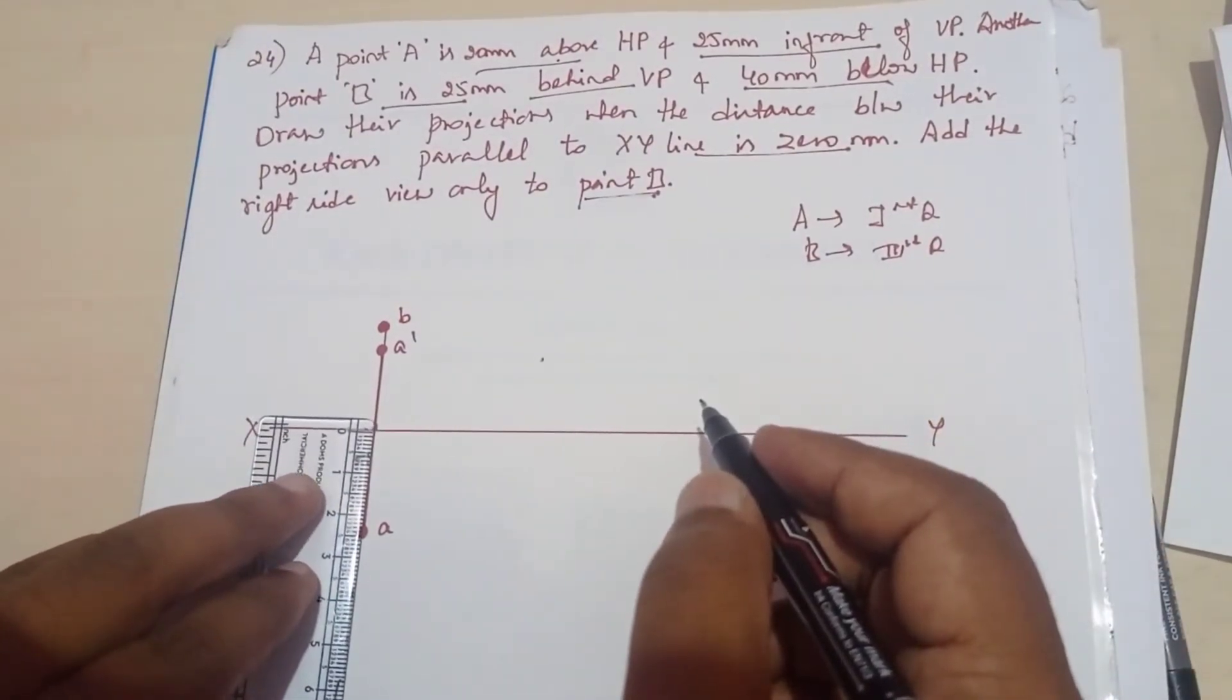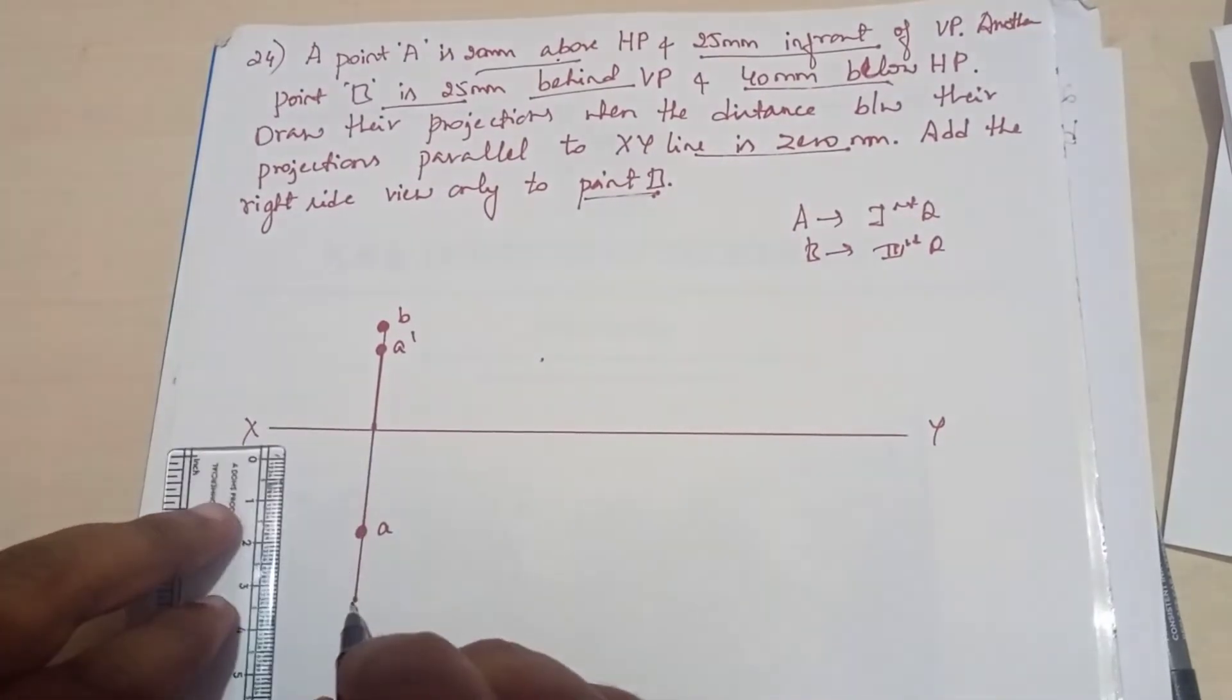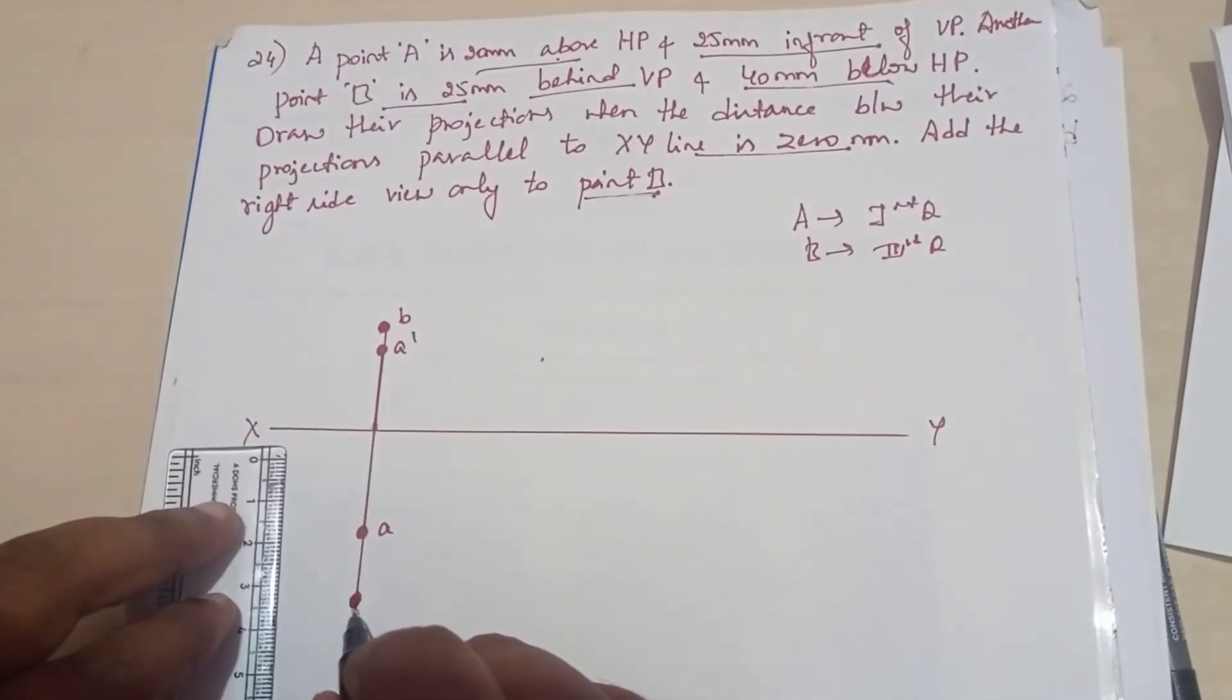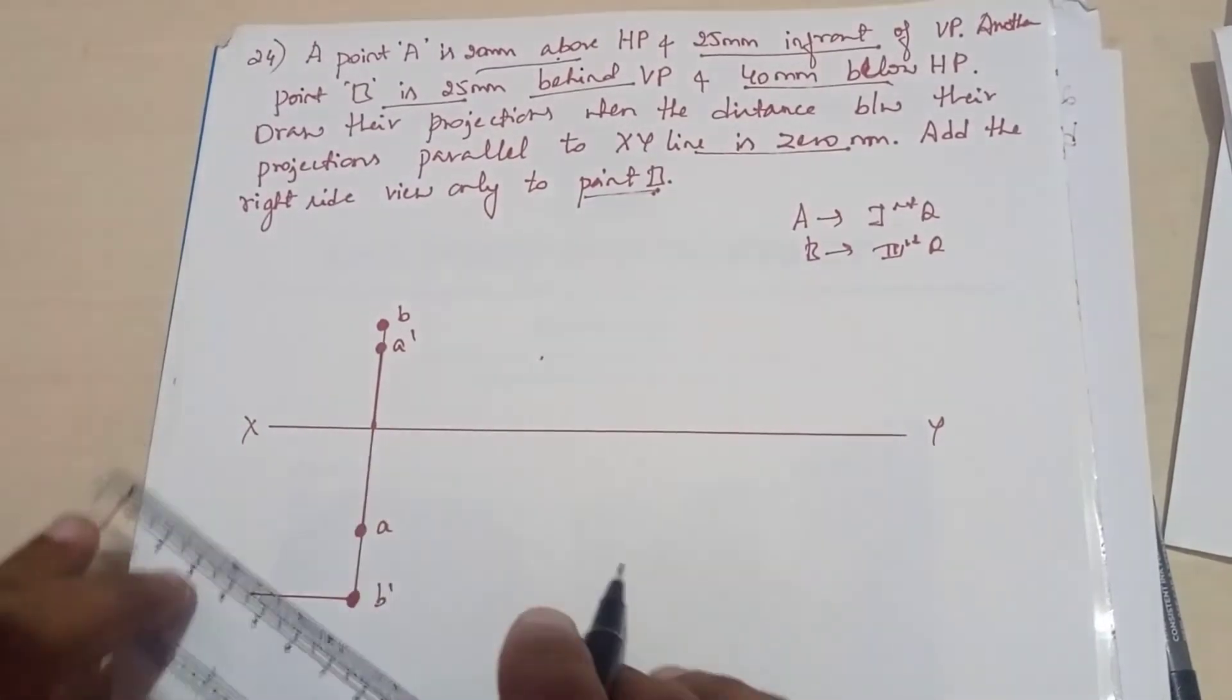So front view here, in third quadrant we get it below. So here you can mention B dash. Now you can mention all these dimensions, okay.